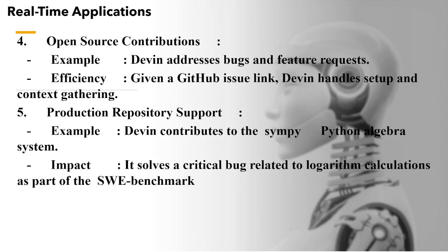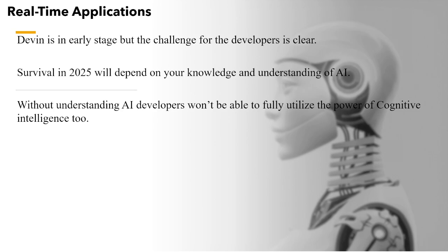Then open source contribution — addressing bugs and feature requests. Given a GitHub issue link, Devin handles setup and context gathering. Then production repository support: Devin can contribute to SymPy's Python algebra system and has solved a critical bug related to logarithm calculation as part of the SWE benchmark. These are just a few examples from their official website. Devin is in early stages — thank God — but the challenge for the developer is very, very clear. Survival in 2025 will depend on your knowledge and understanding of AI, and without understanding AI, developers won't be able to fully utilize cognitive intelligence.